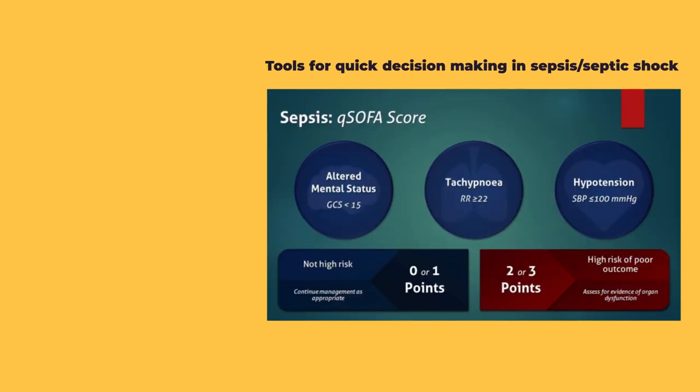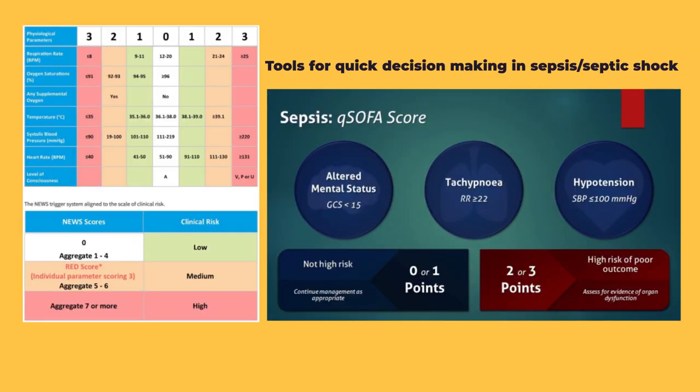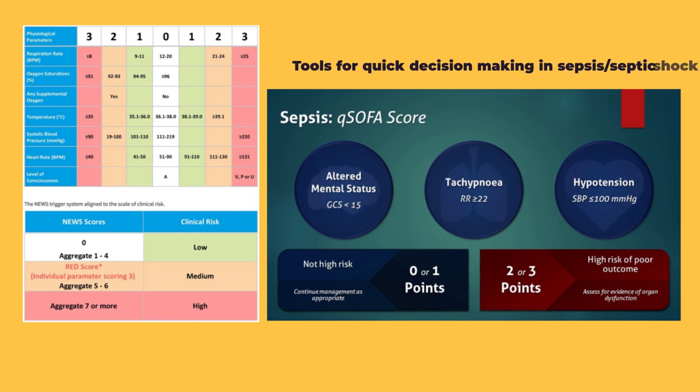We have several tools to assess patients who are critically ill from sepsis or septic shock — tools such as the qSOFA score or the NEWS2 score. These tools basically indicate that if a patient has a significant score, they have a higher risk of mortality or a higher risk of requiring prolonged intensive care in the ICU.